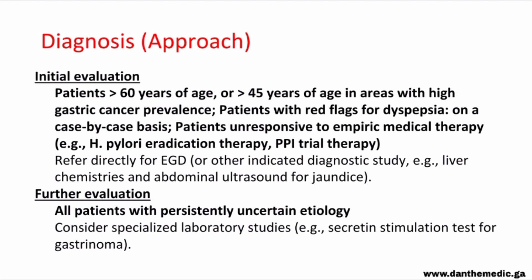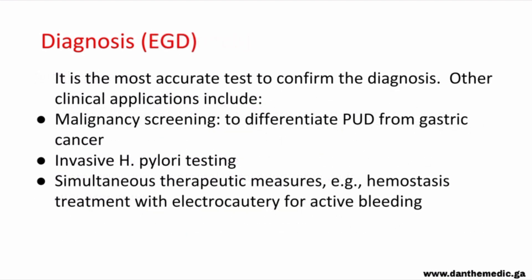Further evaluation is recommended in patients with persistently uncertain etiology, including specialized laboratory studies like secretin stimulation test for Zollinger-Ellison syndrome. The most accurate test to confirm peptic ulcer disease is esophagogastroduodenoscopy. It is used for malignancy screening to differentiate peptic ulcer disease from gastric cancer via visualization of lesions and biopsy sampling, for invasive H. pylori testing, and for simultaneous therapeutic measures like hemostasis with electrocautery for active bleeding.